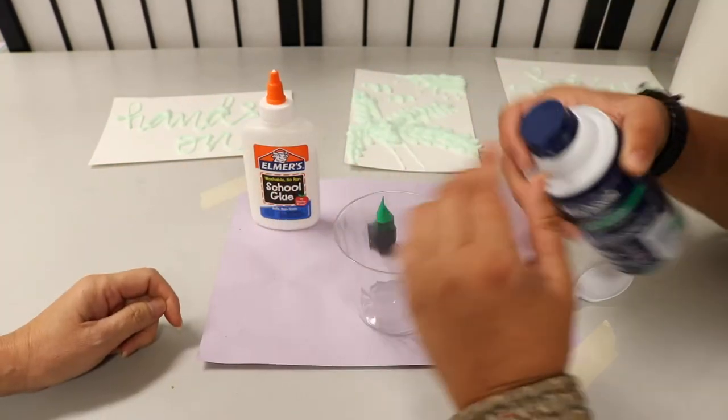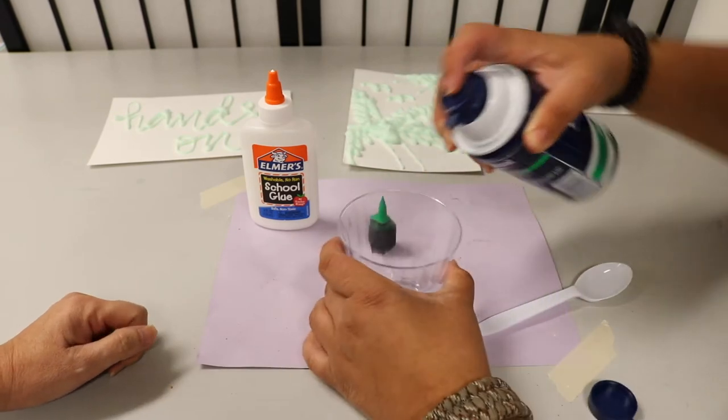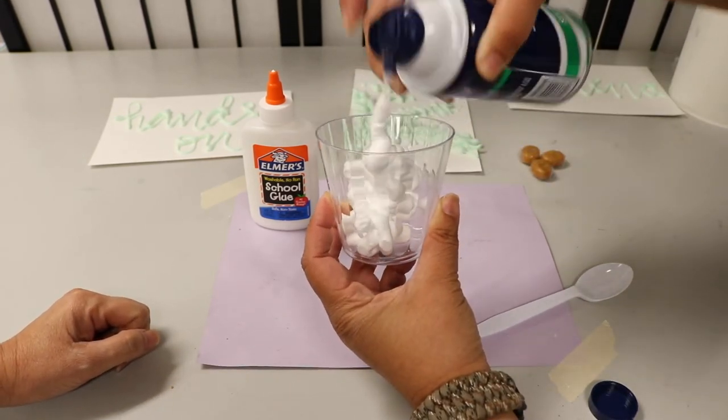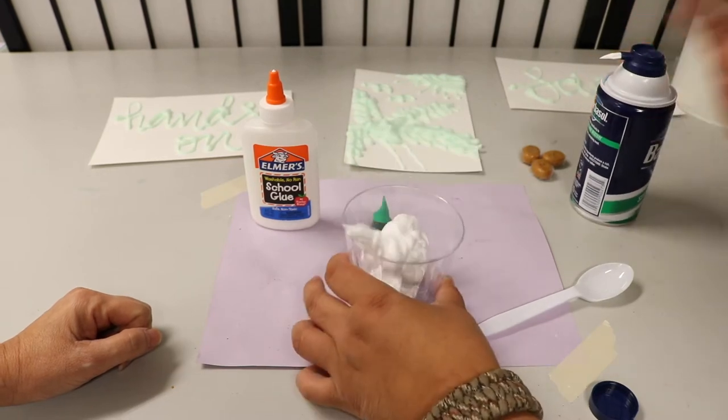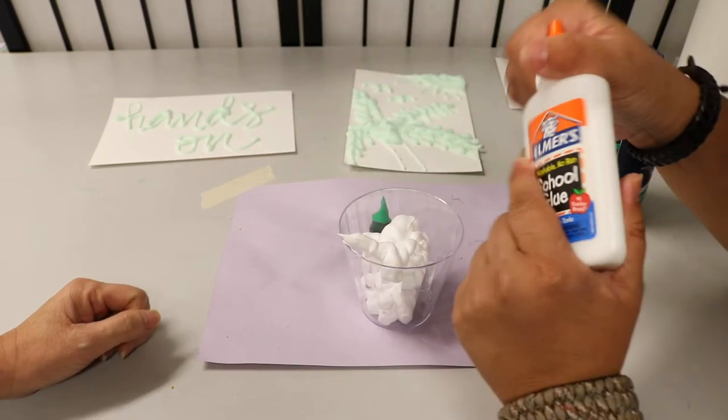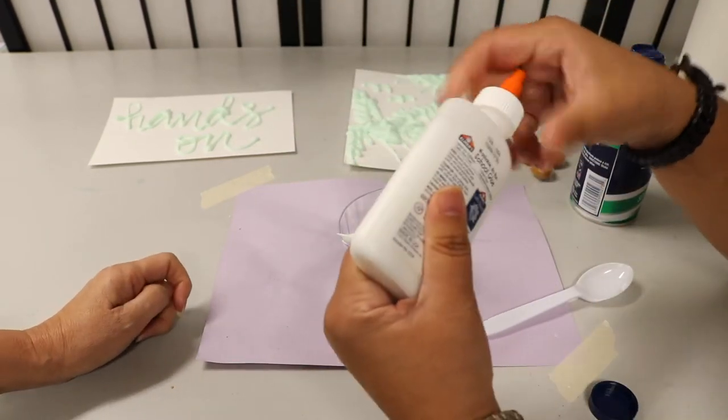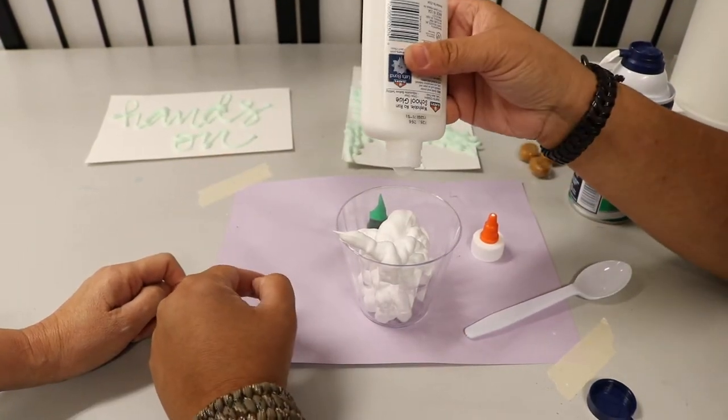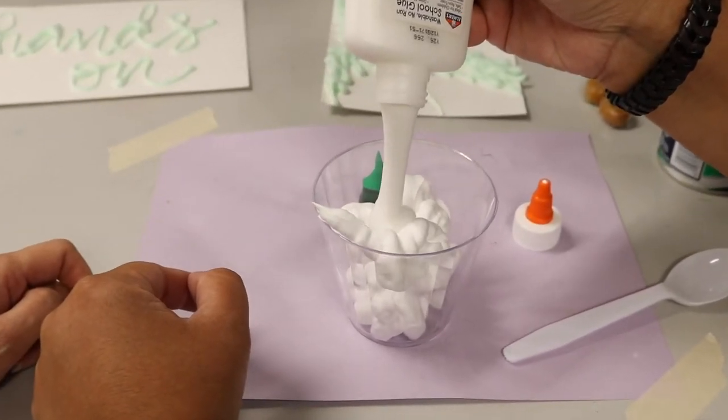Oh sorry, we're gonna take the cup off. That'll work better now. Yeah. That's about good. And you just pour some glue in there. Squeeze it out.